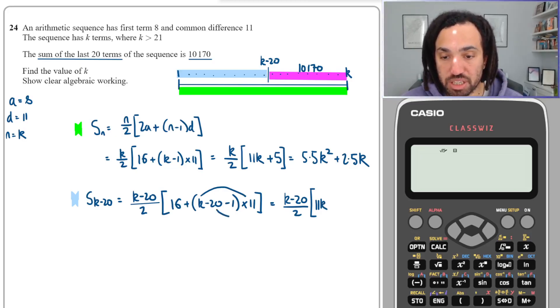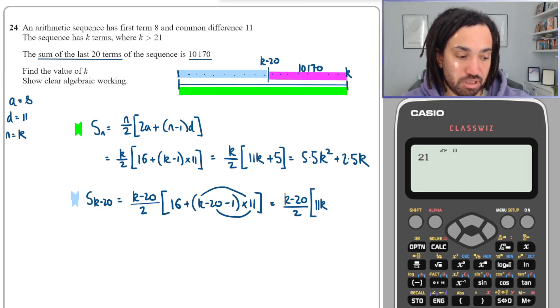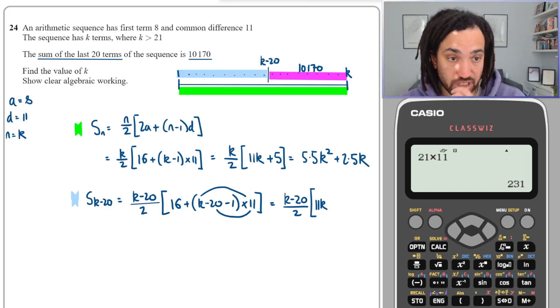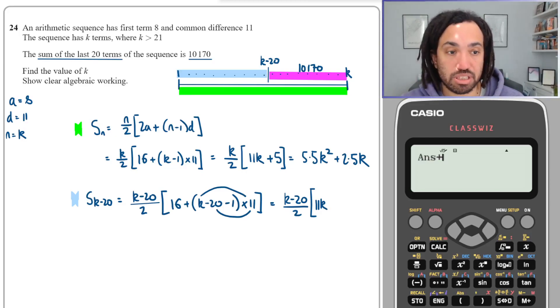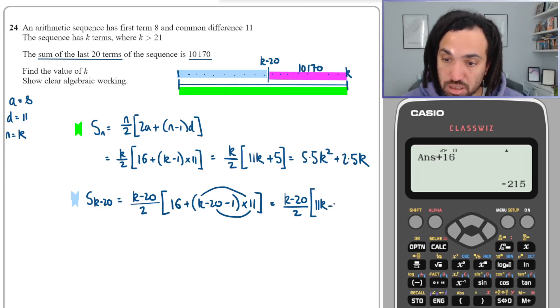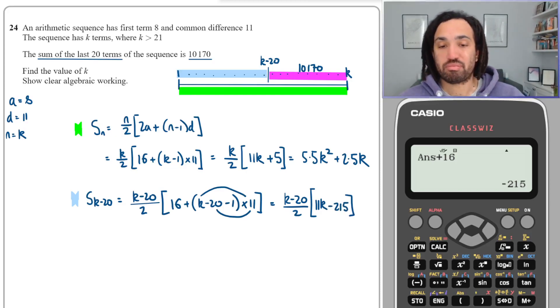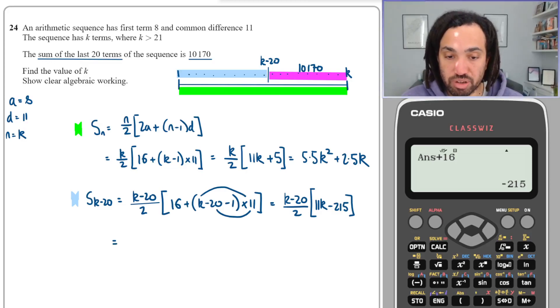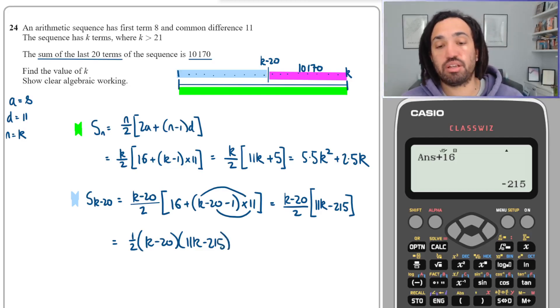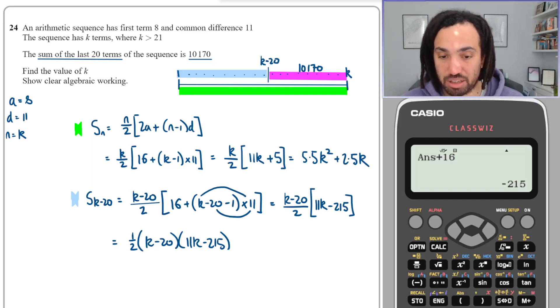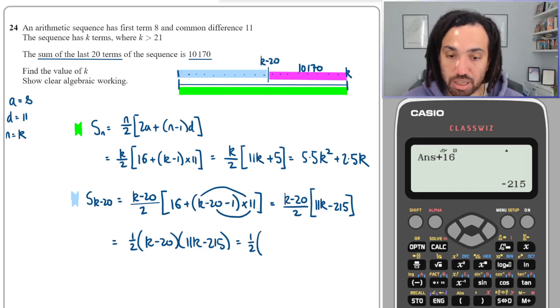I'm going to get minus 21 times by 11. Should know that, but don't want to make a mistake. So that's 231, minus 231. And then we're going to add on 16, so we're going to get minus 215. Okay, so let me just rewrite that as one half multiplied by k minus 20 multiplied by 11k minus 215. Now I've done that such that it's just a lot easier to multiply out this double bracket, and now I can do the half afterwards.